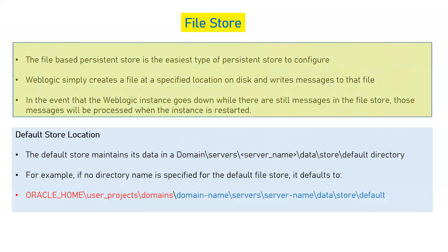The file-based persistent store is the easiest type to configure. There is a default file store for your JMS server. The default persistent store is a file store, meaning your messages will be stored at the file system level. WebLogic creates a file at a specified location on disk and writes messages there. Even if you don't create a directory, a default directory will be assigned for your messages.